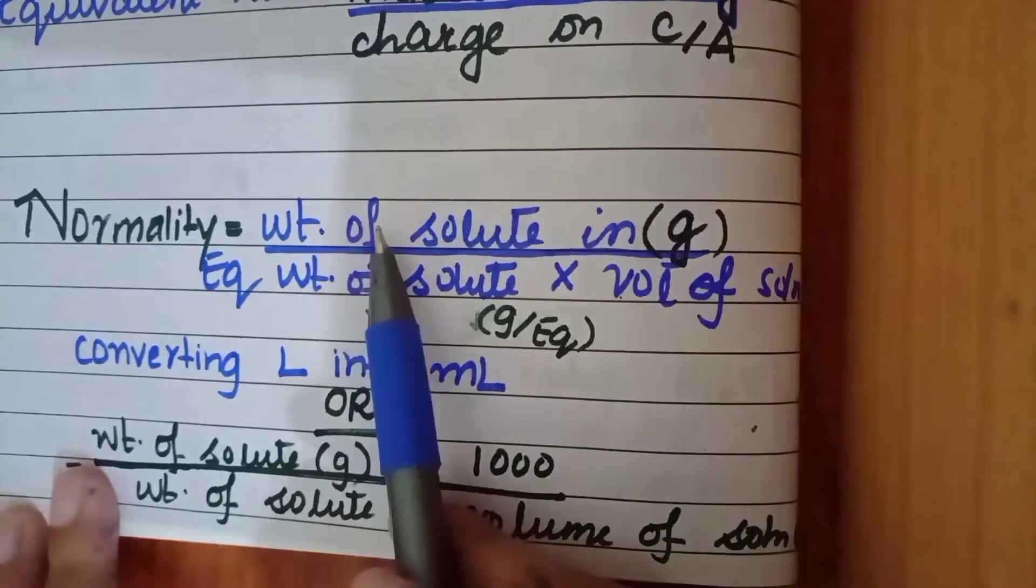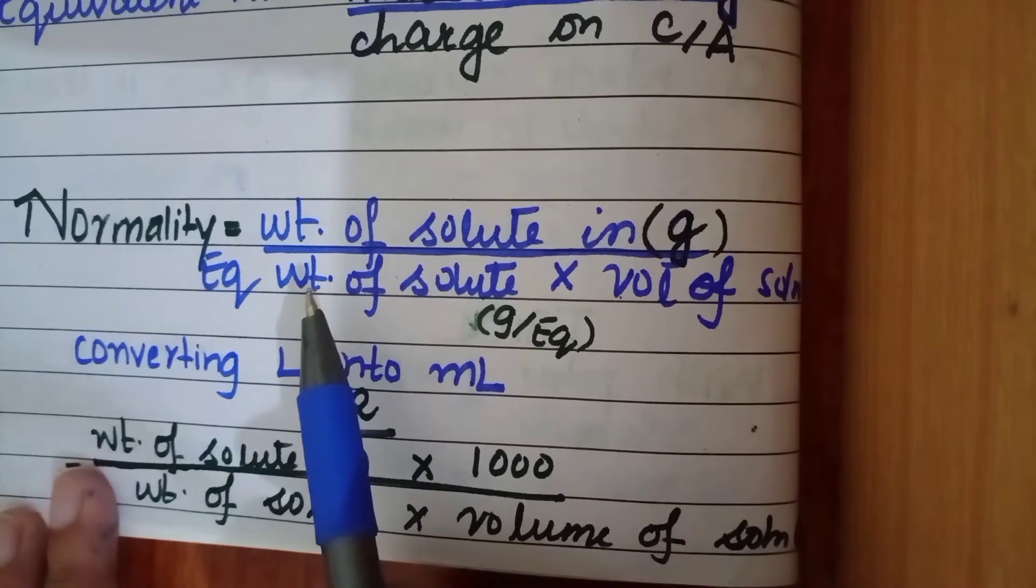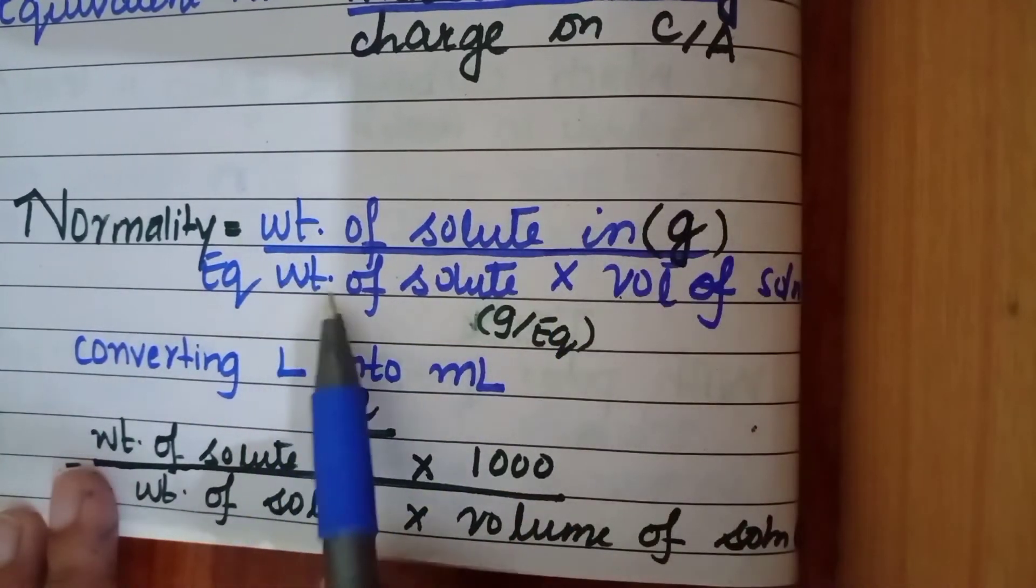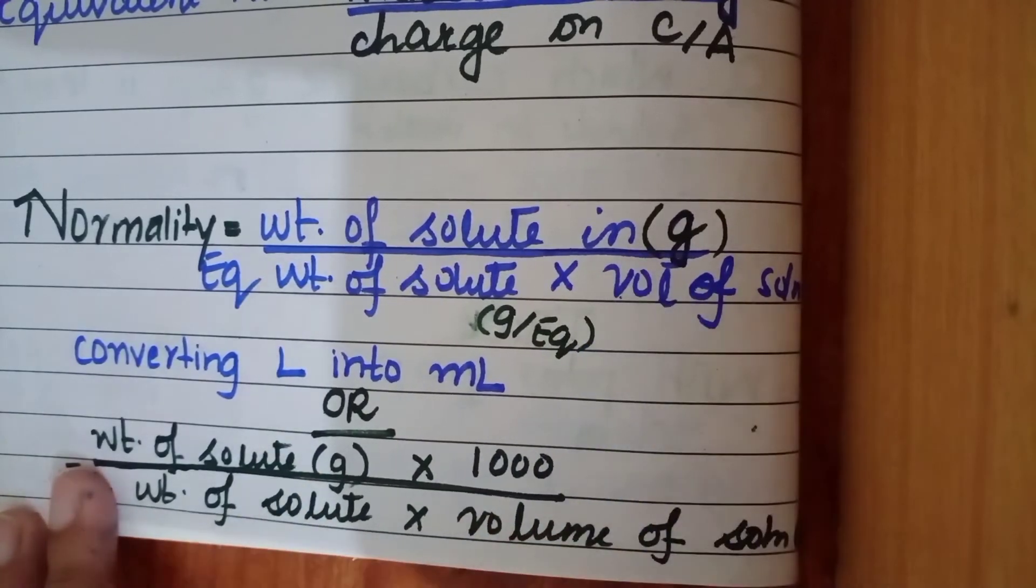Instead of writing gram equivalent weight of solute divided by liter of solution, I am going to write it as weight of solute in grams divided by equivalent weight of solute in gram per equivalent multiplied by volume of solution.